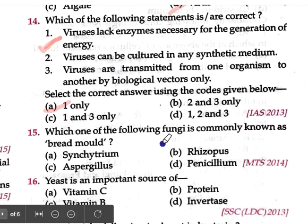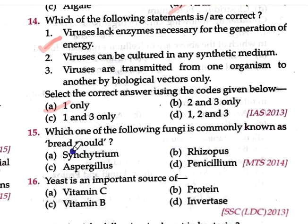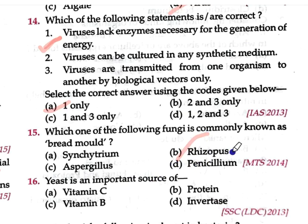Question number 15: Which one of the following fungi is commonly known as bread mold? Options: Centurium, Rhizopus, Aspergillus, Penicillium. The correct answer is Rhizopus — specifically Rhizopus stolonifer. We will discuss other questions in our next video. Thank you very much.